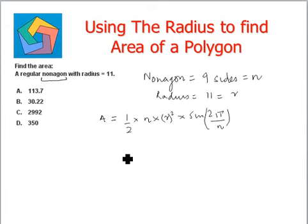So, we'll plug in the values: half times n is 9, 11 squared, times sine of 2 pi over 9.